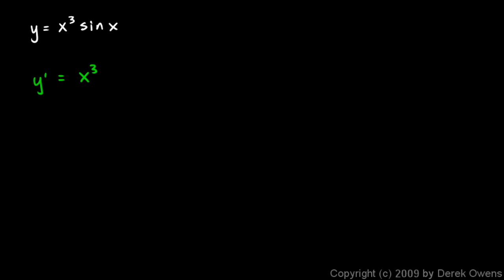So the first is x cubed, and the second is sine x, so the derivative of that is cosine x. That gives us the first times the derivative of the second, plus the second which is sine x times the derivative of the first, which would be 3x squared.